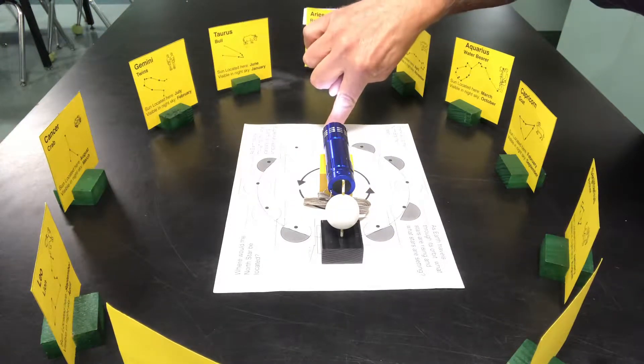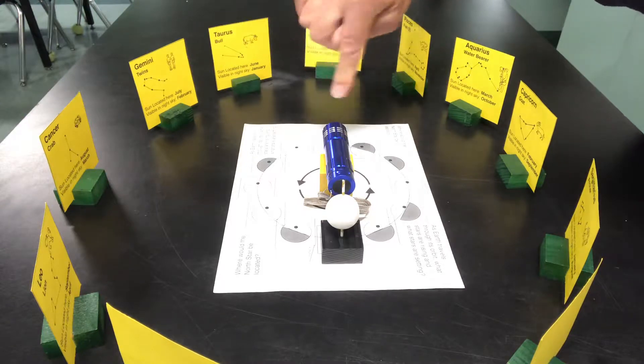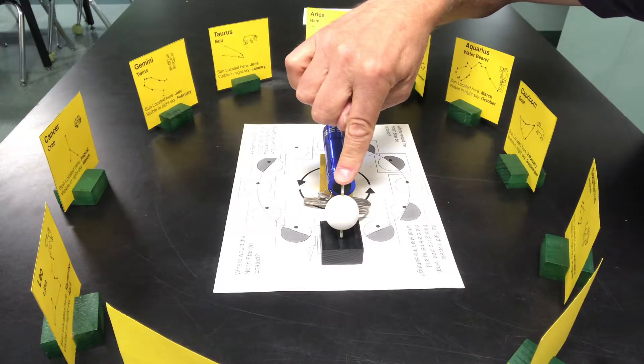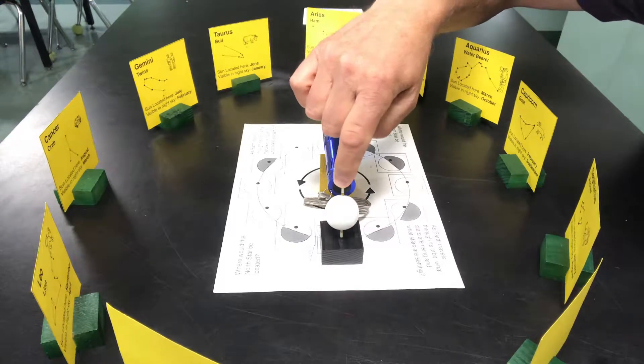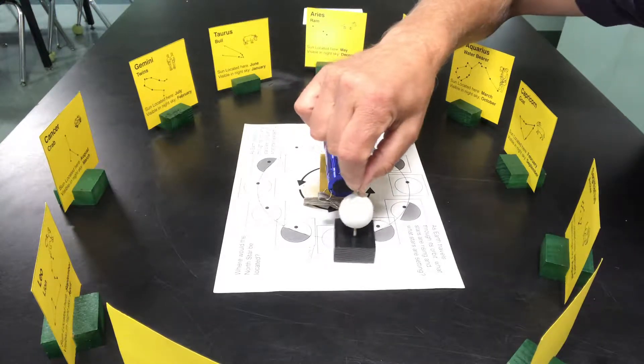In the winter solstice, it's pointing away from the sun in the Northern Hemisphere. And the North Pole is tilted toward the sun during the summer solstice.